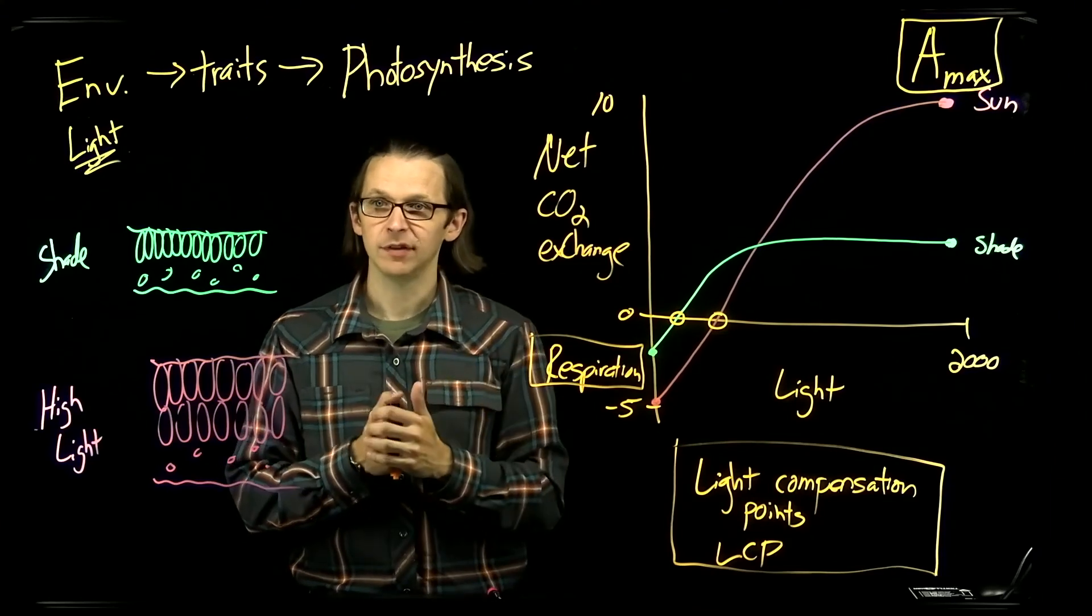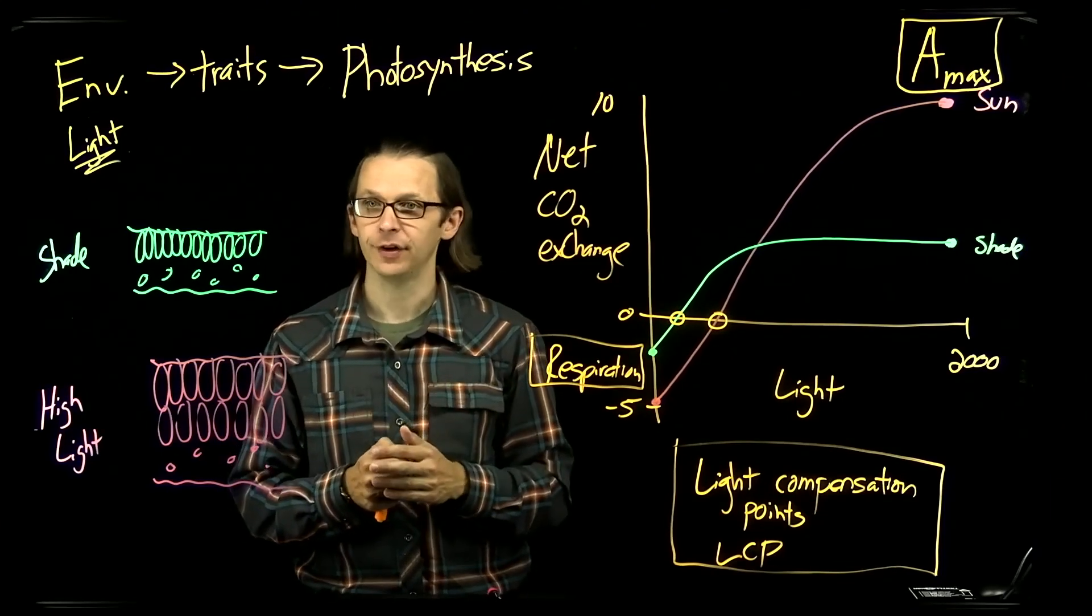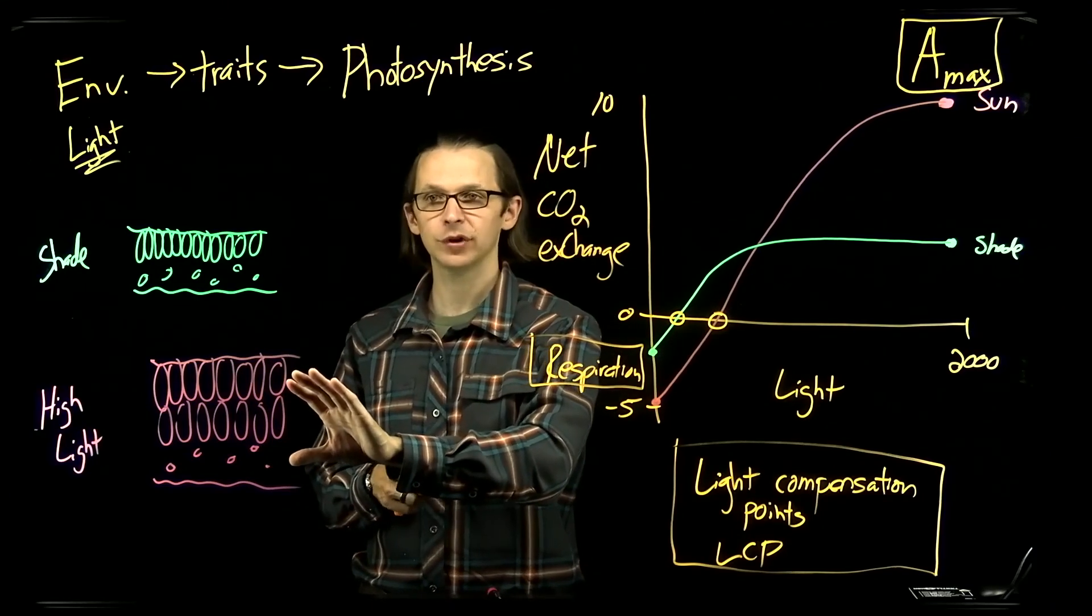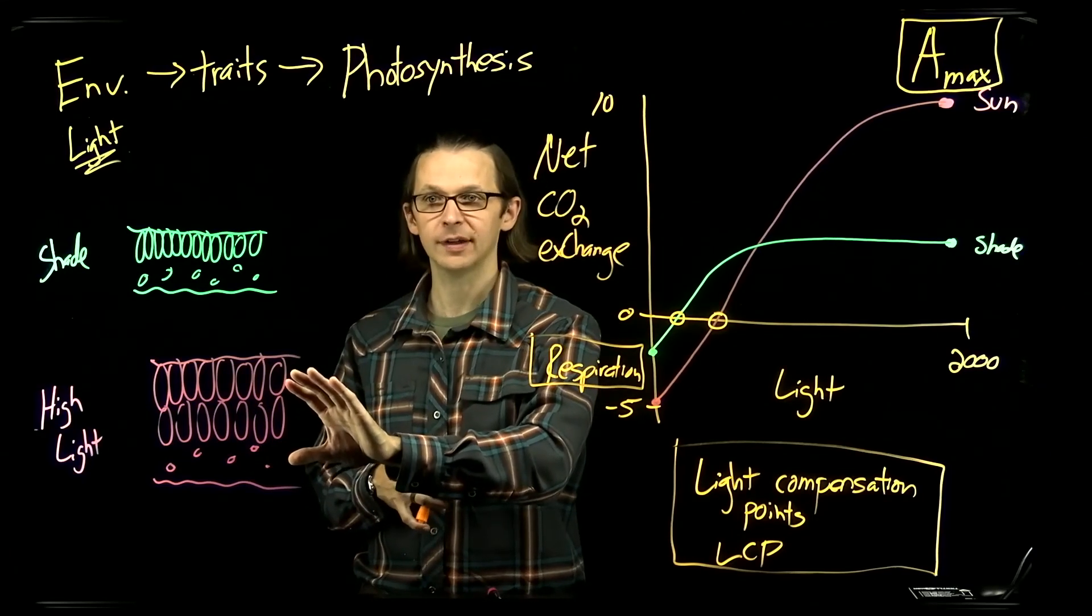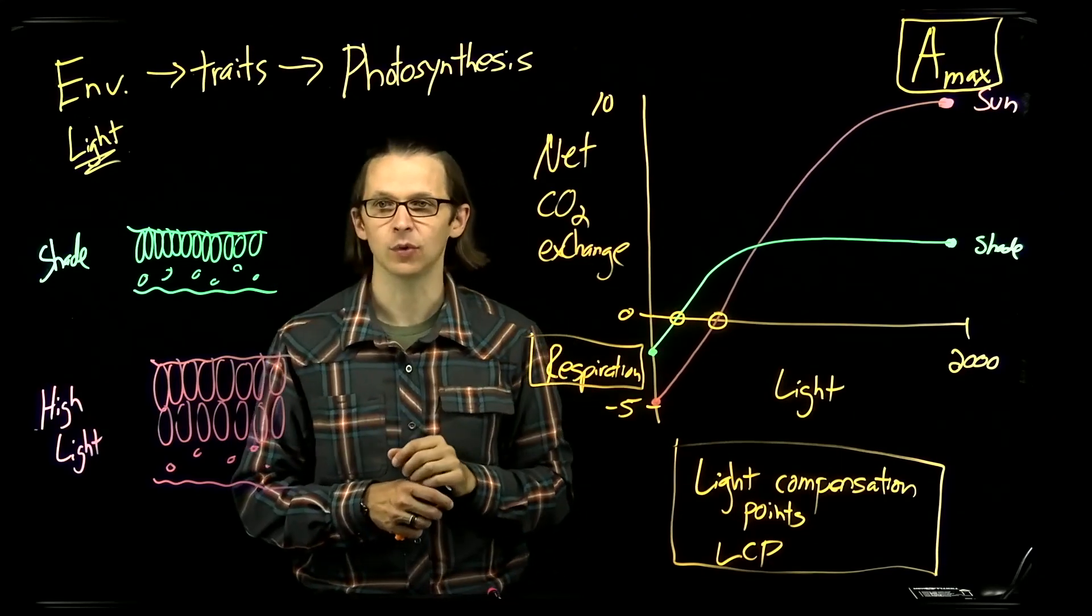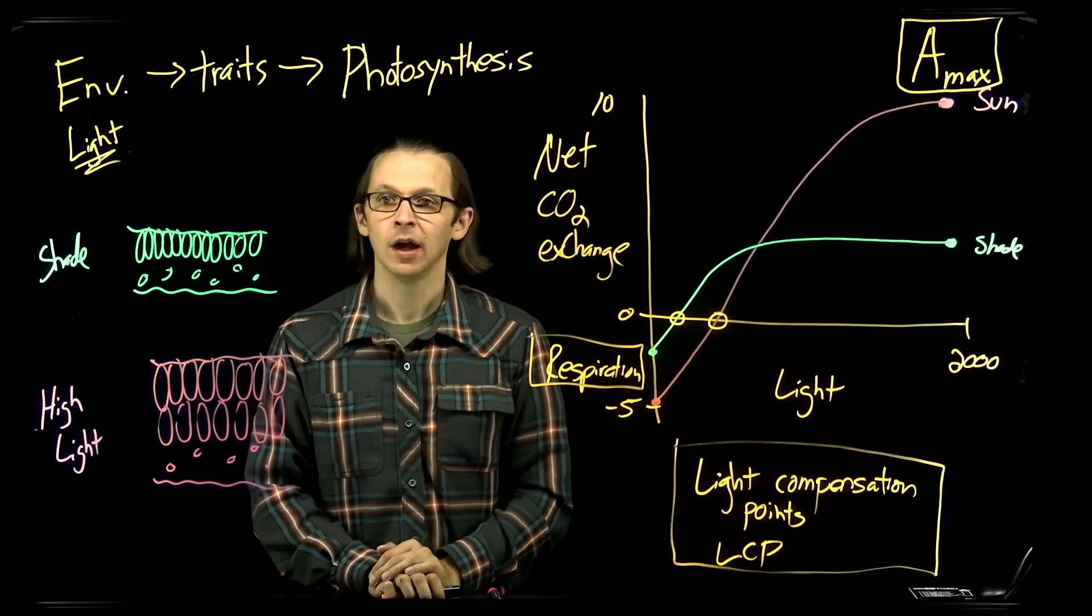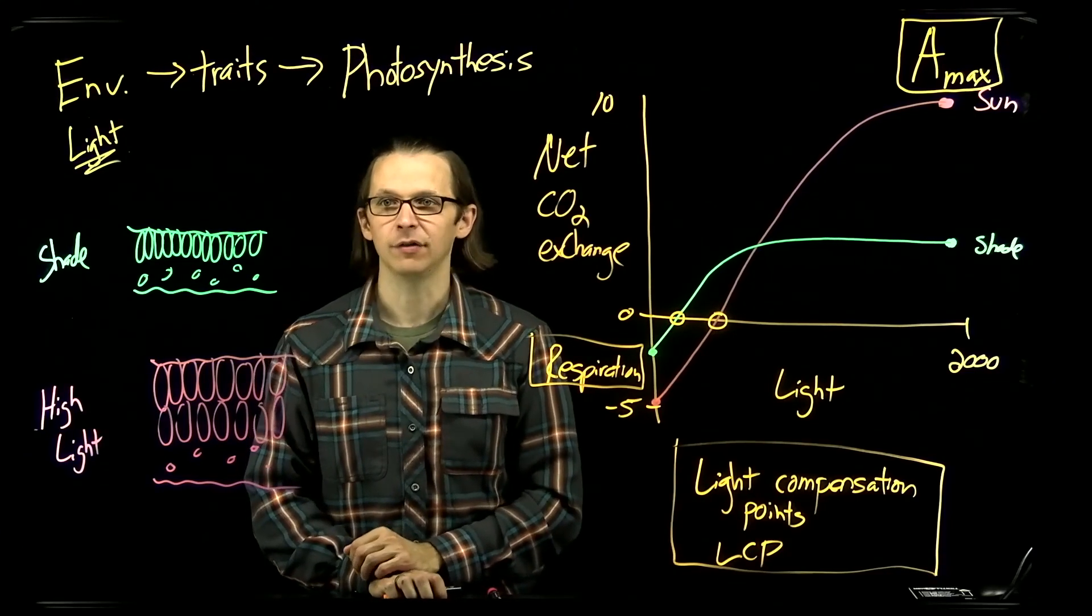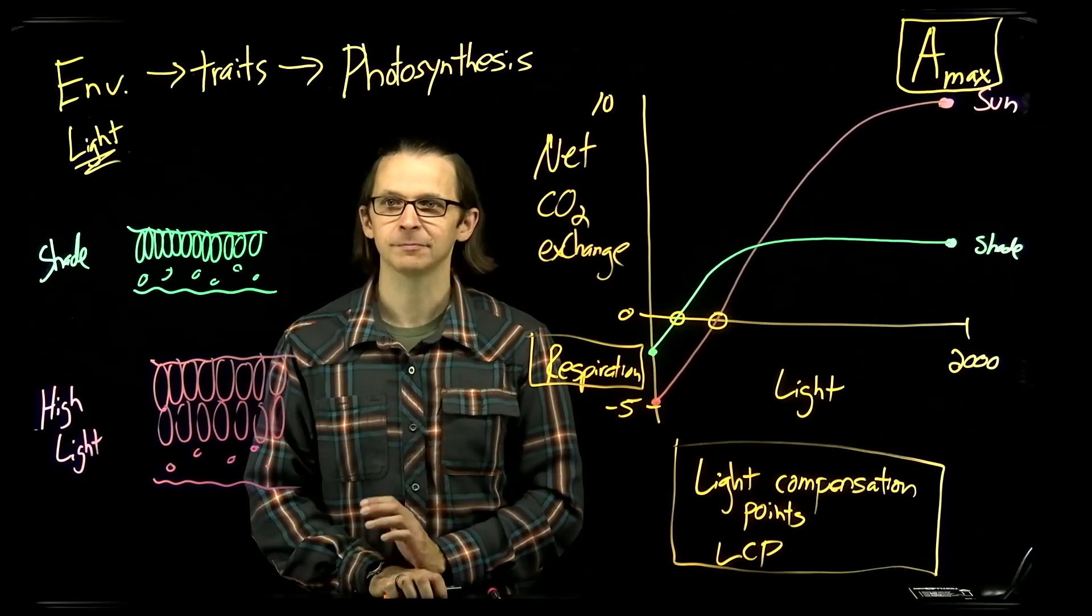Within the crowns of individual trees we also see variation in leaf traits where we have high light leaves at the top of tree crowns where the light environment is high and the same individual of the same species will make shade leaves lower in their crown. So I hope that this short video helped you to further your understanding of the light responses of photosynthesis. Thanks folks.